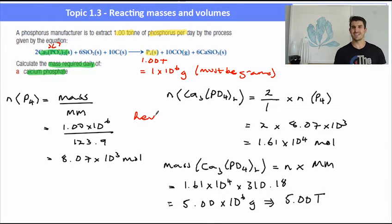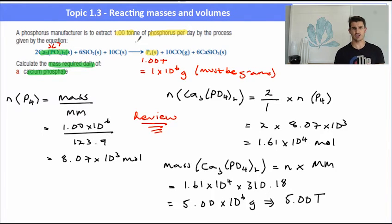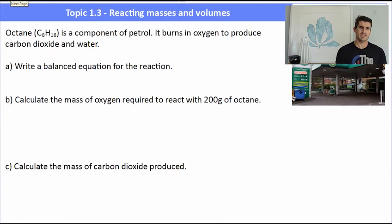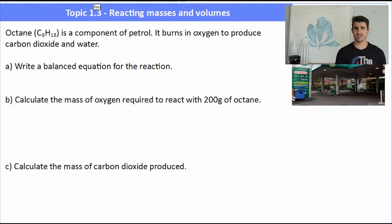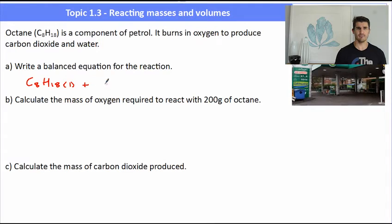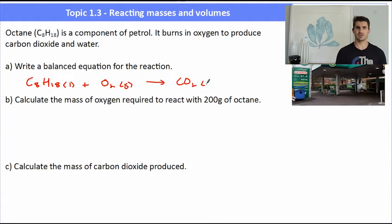To quickly review: find the number of moles of the thing you've been given information about, use the ratio — thing that you want over thing that you've got — and then work out the mass. Another example: octane, C8H18, the main component of petrol. It burns in oxygen to produce carbon dioxide and water. In the other examples you were given the equation already balanced, but for this one you need to balance it. So we have octane plus oxygen forming carbon dioxide and water.